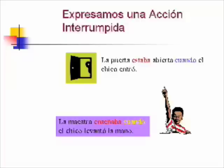Let's see an example of an interrupted action. 'La puerta estaba abierta cuando el chico entró.' Your key word is in blue — cuando — which means there's going to be one action in the imperfect and another in the pretérito. The action in the imperfect is 'estaba abierta' — that was the current situation, what was happening when that situation was interrupted by the boy entering.